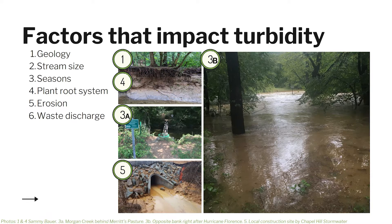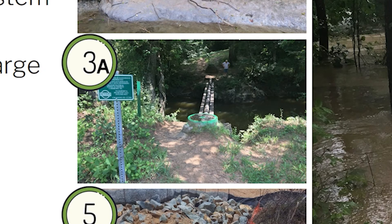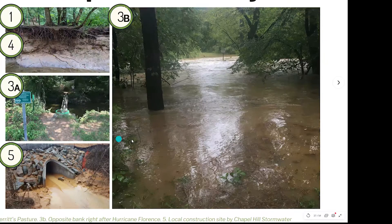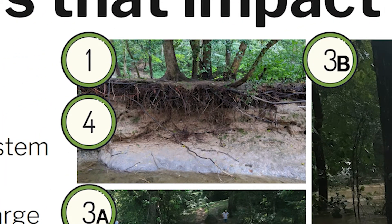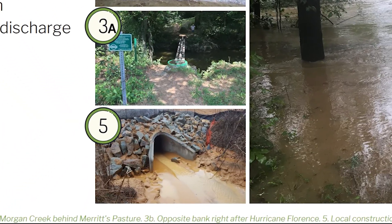The start of the school year is often during peak hurricane season, which can dump a lot of rain on Chapel Hill. Picture 3a shows Morgan Creek by Merritt's Pasture just a few weeks before Hurricane Florence in 2018. Picture 3b is the same creek after the storm — a green sign visible in the first photo is completely underwater, showing how turbid the water becomes as it pulls in so much sediment. Plant root systems also matter — roots help hold soil in place and out of rivers; fires, floods, windstorms, and other natural events can remove this vegetation, increasing erosion and turbidity.